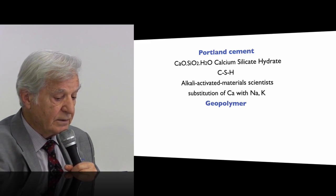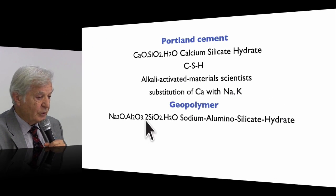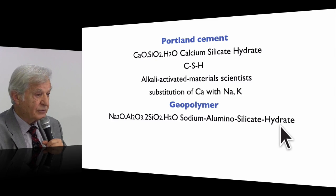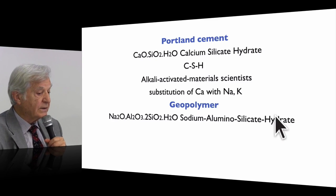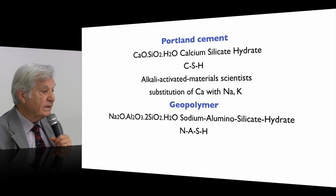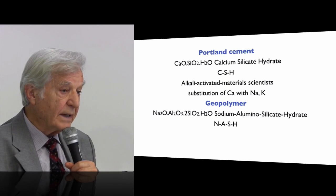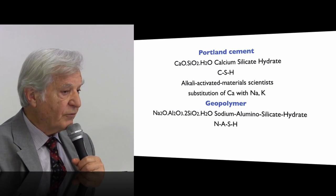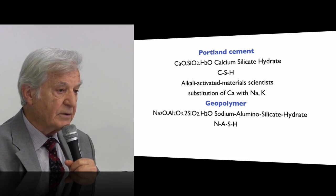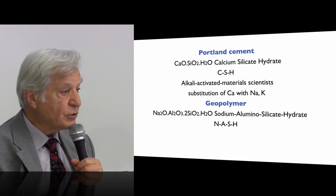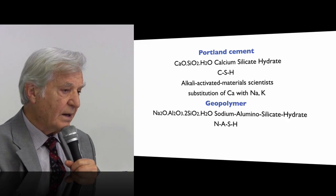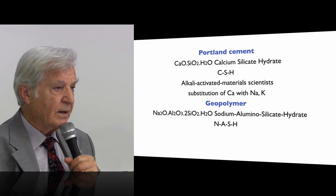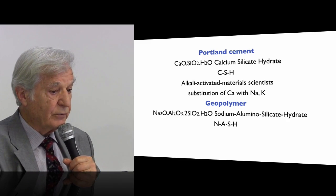But if you replace the calcium with sodium and potassium, as they are doing for geopolymer — sodium, aluminum, silicon, oxygen — sodium aluminosilicate hydrate — the sodium is very soluble in water. That means if it is a hydrate, all the sodium will be leached out, will move. So they call it N-A-S-H, which is totally wrong. And it is a very crucial, fundamental mistake from a scientific point of view, inducing all wrong behavior and very wrong thinking about what geopolymer is.